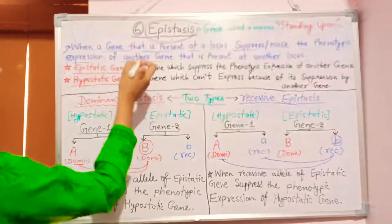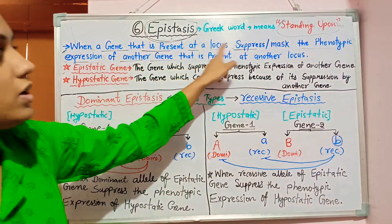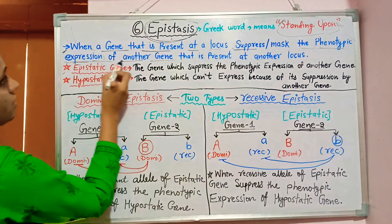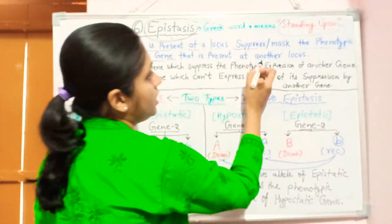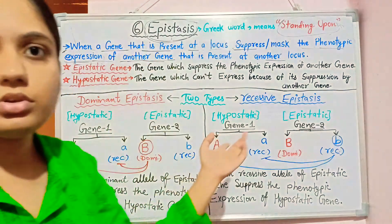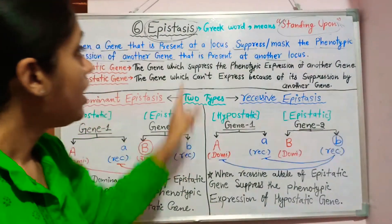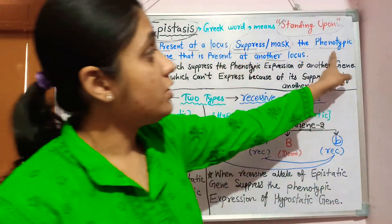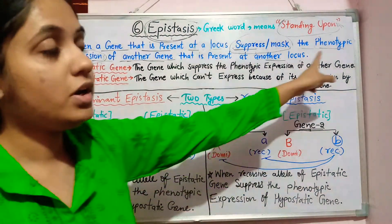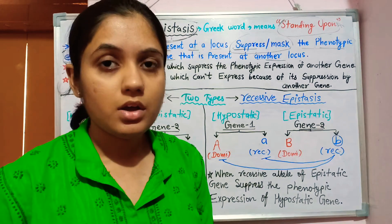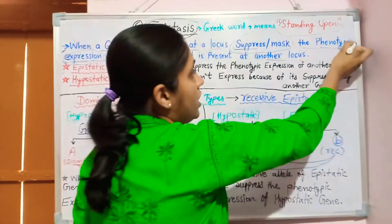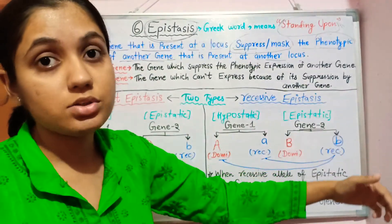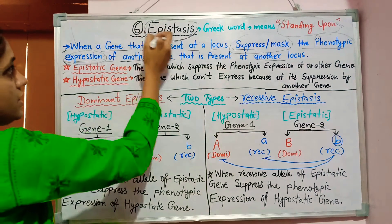The definition of epistasis: when a gene present at one locus suppresses or masks the phenotypic expression of another gene present at a different locus. Only the phenotypic expression is suppressed or masked, because the genotypes occur independently. This process is known as epistasis.